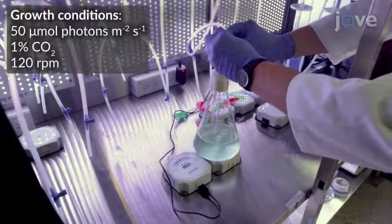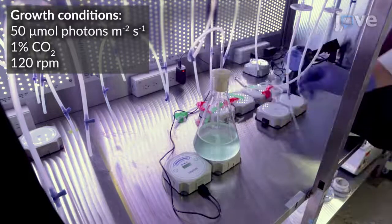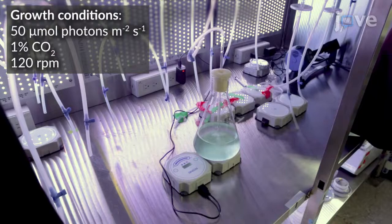Grow the culture with constant stirring at 30 degrees Celsius until the OD reaches 0.8 to 1, indicating a late exponential growth phase.